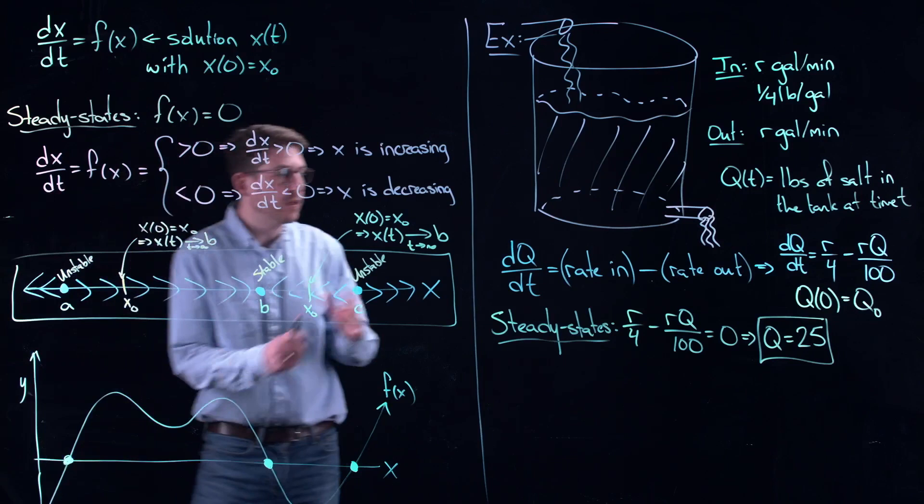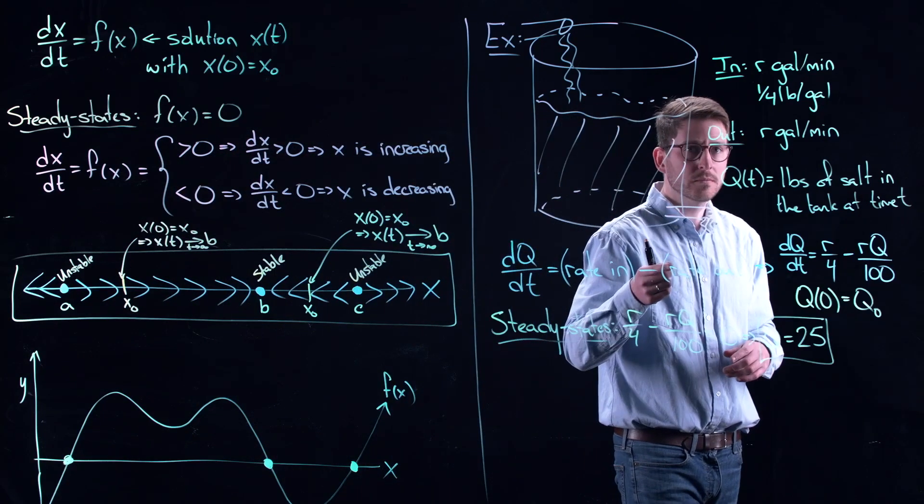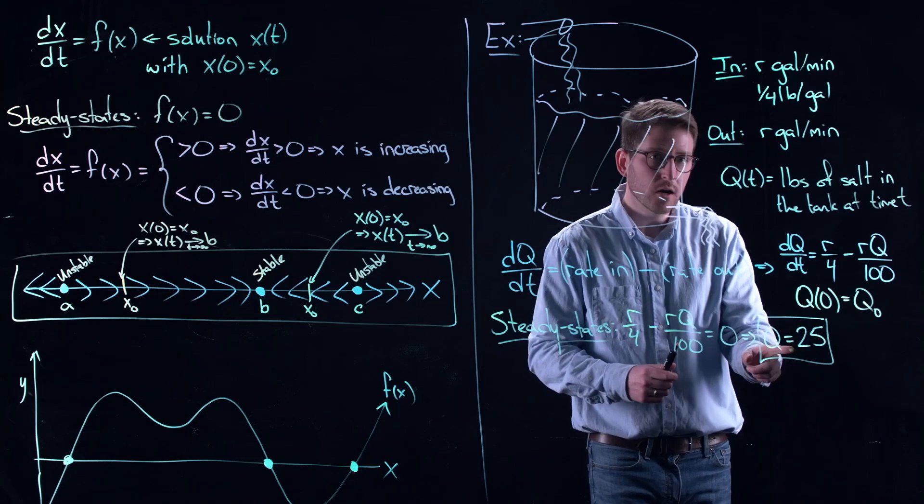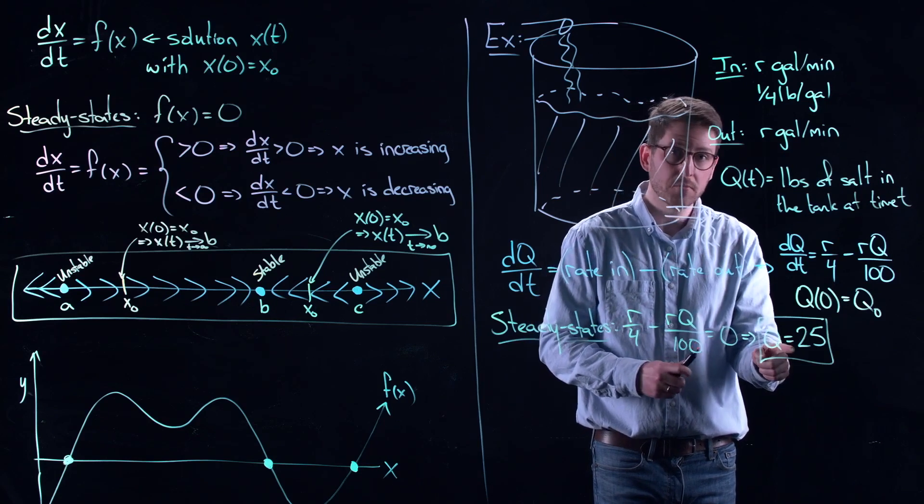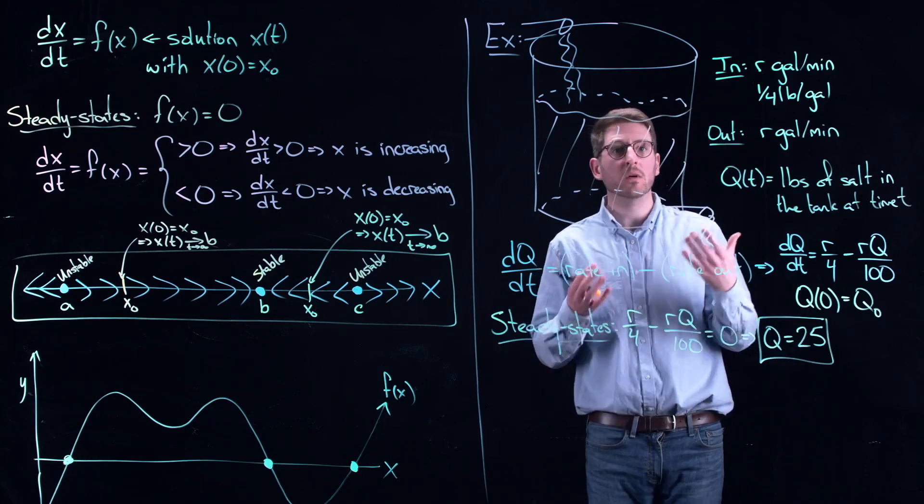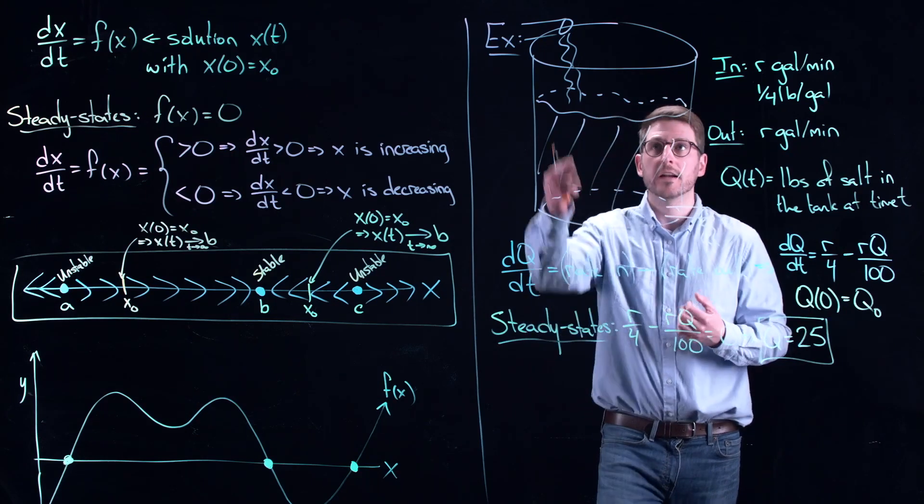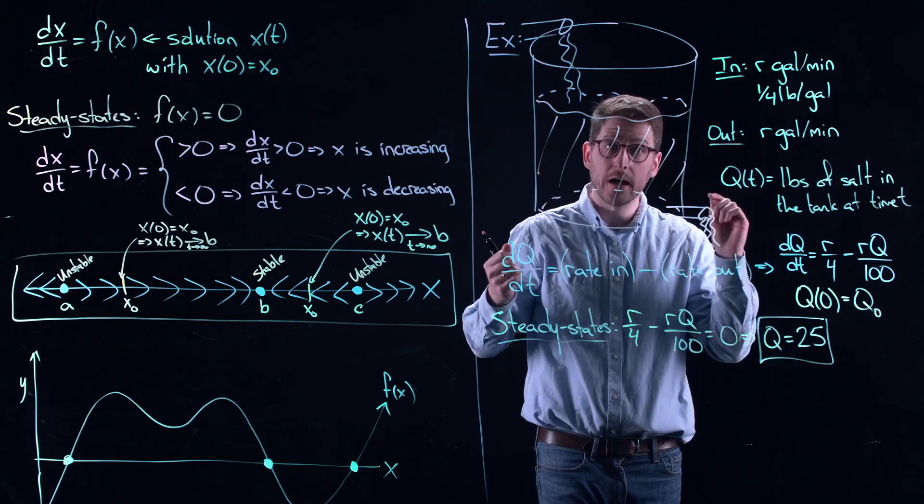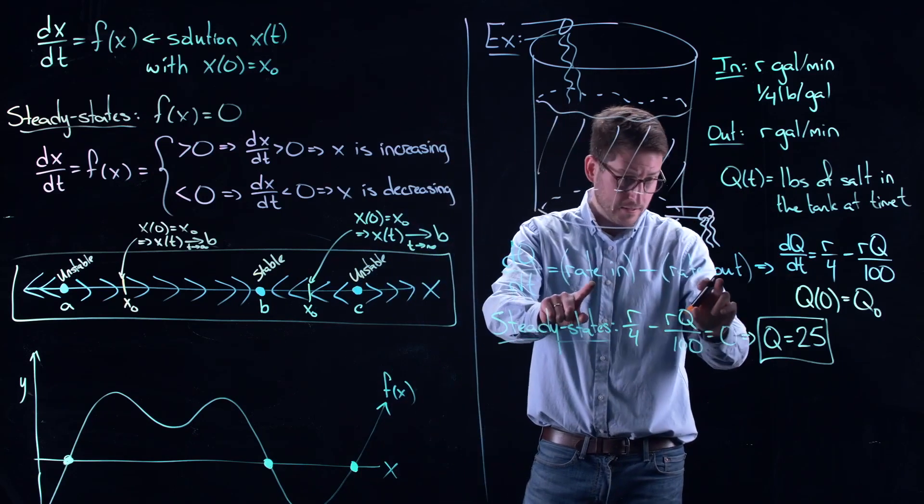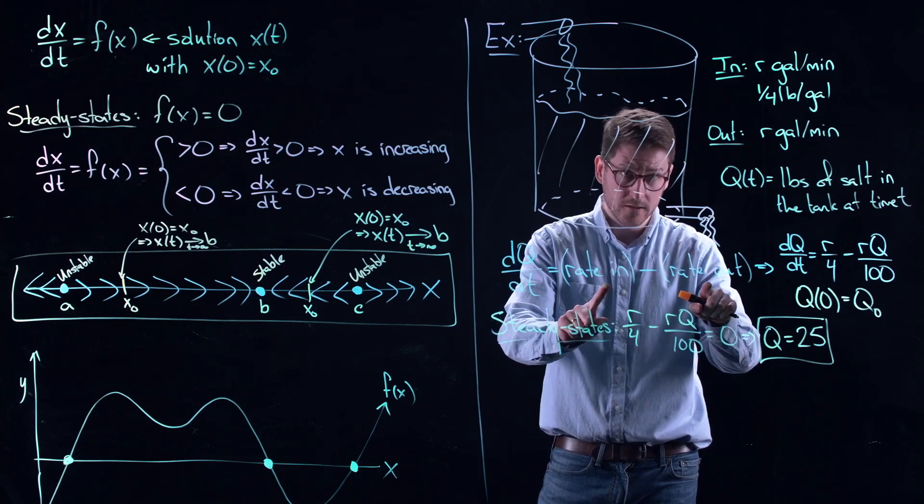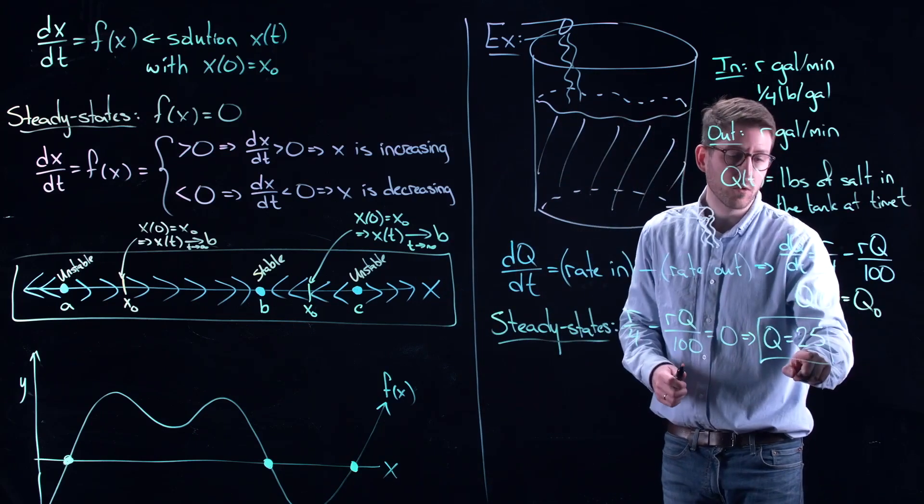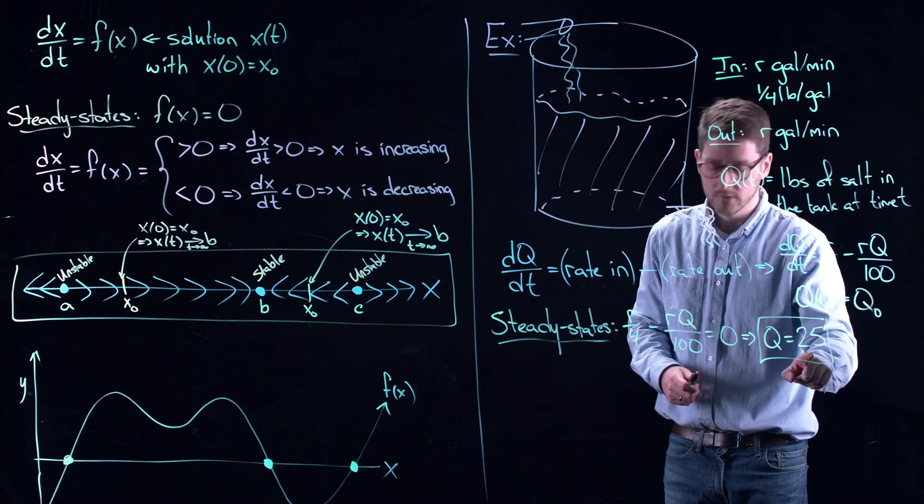And basically what it says, it's completely independent of the rate that you're flowing in and out. And what this is telling me is that if I start with initially 25 pounds of salt mixed into this water, then I am going to remain with 25 pounds of salt in there. It's coming in at the same rate that it's draining out. You have a perfect balance of your equation. Set this equal to 0. That tells me rate in is equal to rate out. The amount of salt going in is exactly the amount of salt going out. And the only way you can do this is if you start yourself with 25 pounds of salt in the tank.